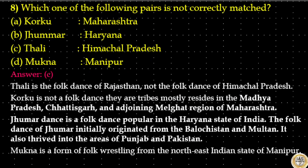Korku is not a folk dance — it is a tribe that mostly resides in Madhya Pradesh, Chhattisgarh and the adjoining Melghat region of Maharashtra. Jumar dance is a folk dance popular in Haryana; it initially originated from Balochistan and Multan and also thrived in areas of Punjab and Pakistan. Mukna is a form of folk wrestling from the northeast Indian state of Manipur.